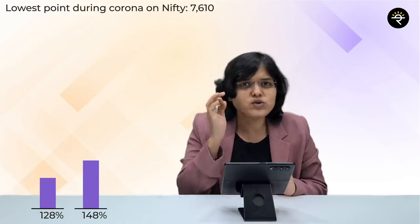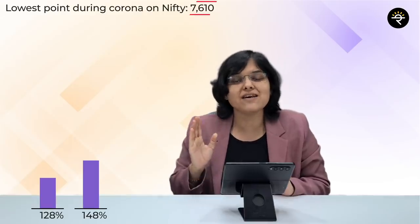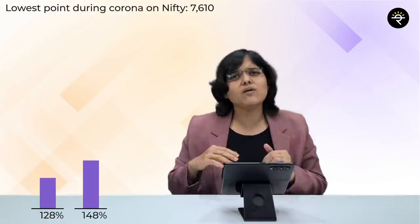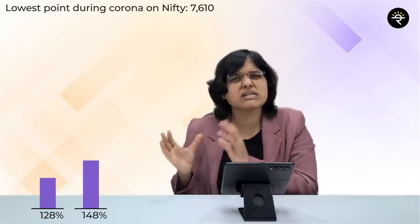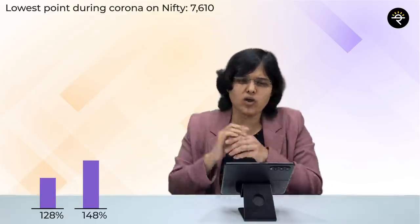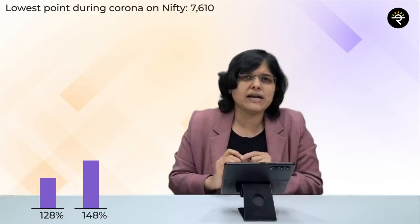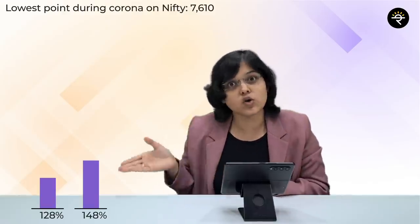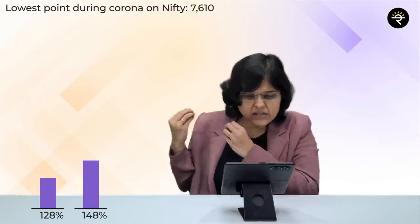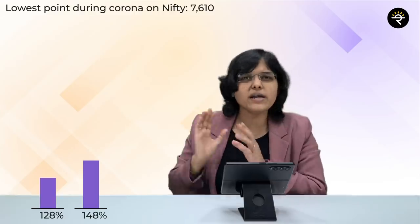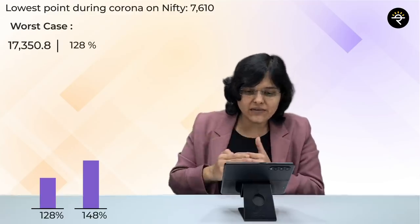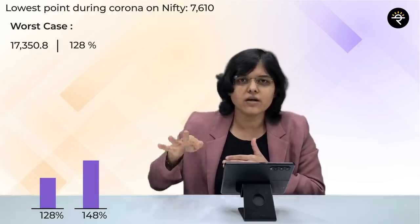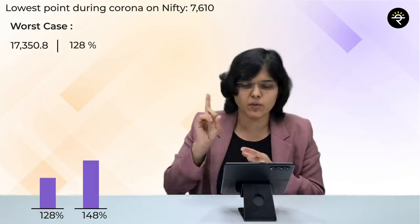During Corona in March 2020, the lowest point was 7,610. Let's analyze the worst case scenario first: from 7,610, if the market jumps only 128% - the dot-com case scenario - we could see a level of 17,350 on Nifty. That level we have already surpassed.